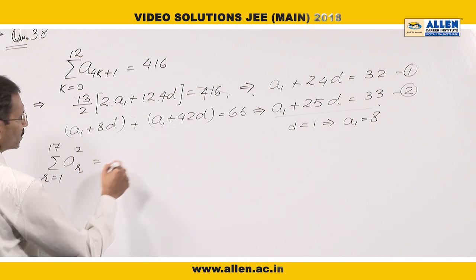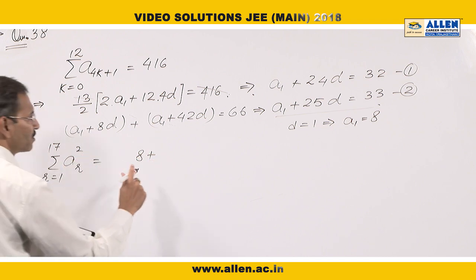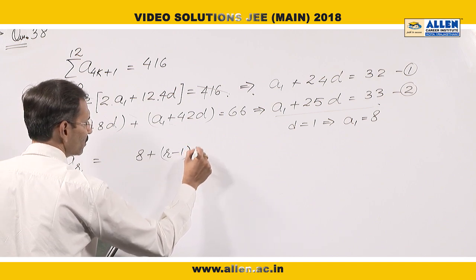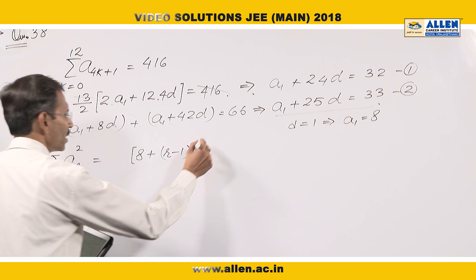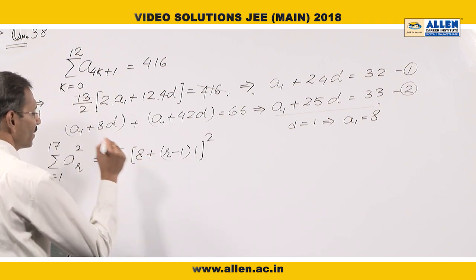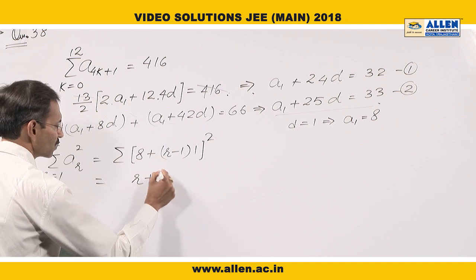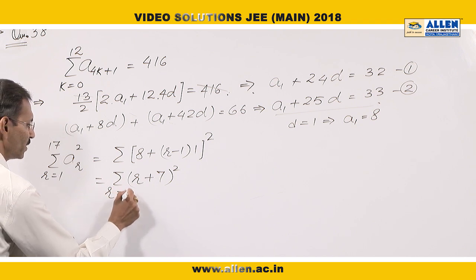aᵣ² where r is from 1 to 17. This is equal to [8 + (r-1) times d]². d is 1. This is the r-th term aᵣ. It is squared and we are going to find the sum.